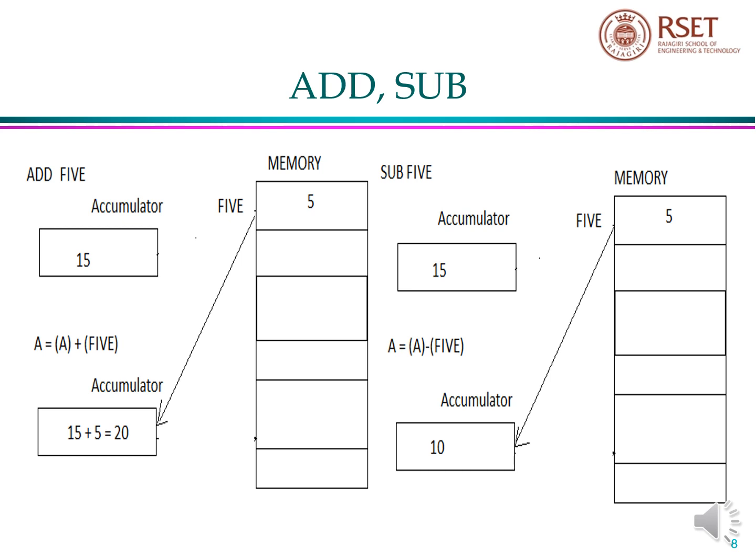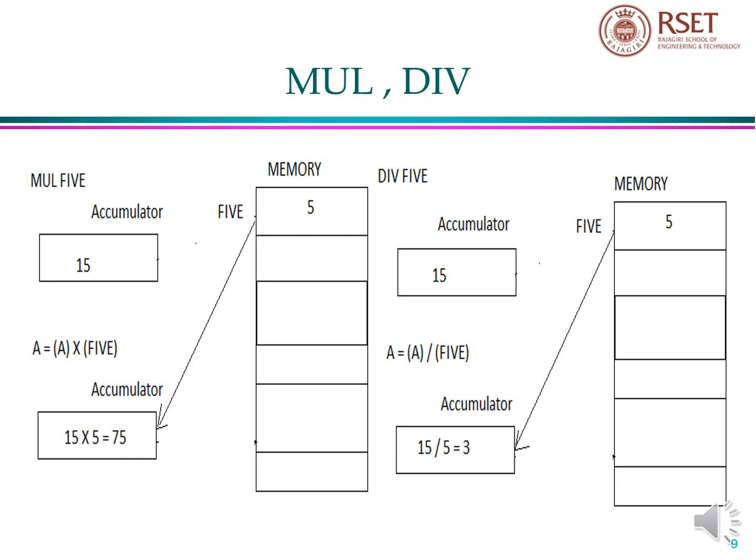Add and subtract instructions. ADD 5 means add the contents of the memory location 5 to the contents of accumulator, and the result after addition is stored in accumulator. We can see that the memory location 5 is having the integer 5, and that is added with 15, and the result 20 is stored in accumulator. SUB 5 means subtract the contents of memory location 5 from the contents of accumulator. So 15 minus 5, 10 is stored in accumulator. Multiply and division instruction. MULTIPLY 5 means the contents of memory location 5 is to be multiplied with the contents of accumulator, and the result is to be stored in accumulator. We can see that 5 into 5 is 25, stored in accumulator. DIV 5 means contents of accumulator is to be divided with the contents of memory location 5. So 15 divided by 5, 3 is stored in accumulator.